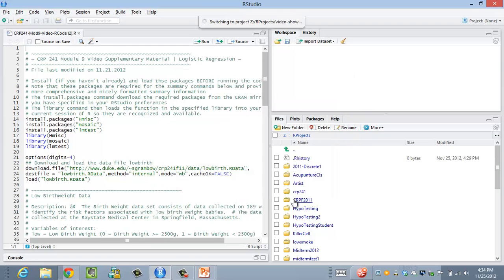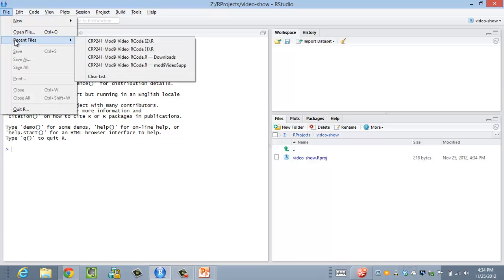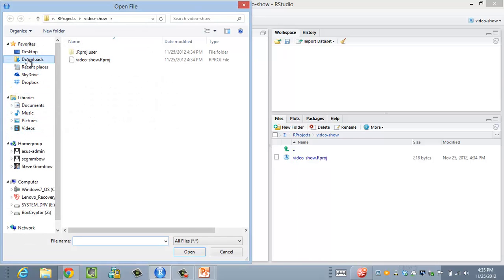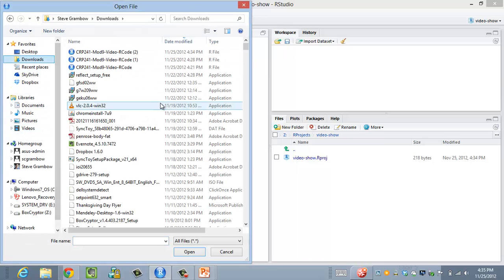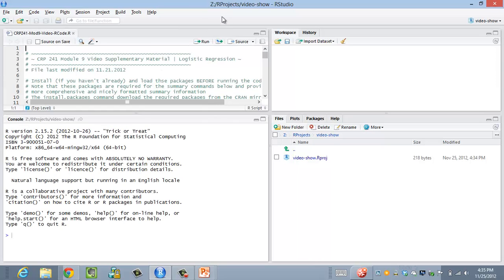I'll call it video show and it's a subdirectory of where I keep all my R projects. So I'm going to create the project and now we're in that folder. Now notice that it just killed my file, so I need to go open that file that I had open.